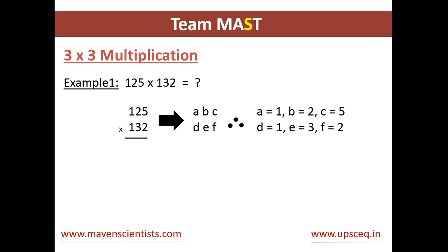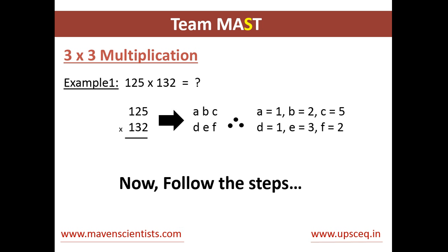We will write the numbers in the same fashion as we did in the previous video. Just there is a little difference — we have 6 numbers here. So we will write A, B, C and D, E, F. Here we get A equals 1, B equals 2, C equals 5, and similarly D equals 1, E equals 3, and F equals 2. Now let's see the steps we are going to follow for this multiplication.